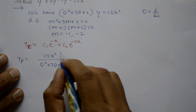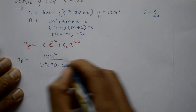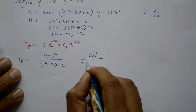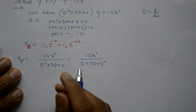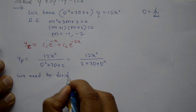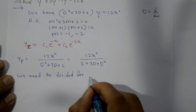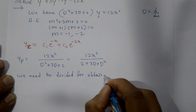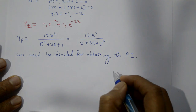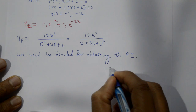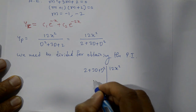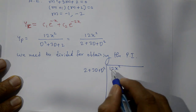Write the numerator 12x² in descending order and the denominator f(D) in ascending powers: (2 + 3D + D²). Now using the division method, divide 12x² by (2 + 3D + D²). First quotient term: 12x² / 2 = 6x².